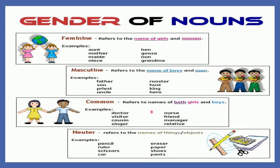Now next is common gender. The common gender refers to the name of both girls and boys. For example: doctor, visitor, cousin, singer, nurse, friend, manager, relative. The common gender belongs to words where the person may be a girl or a boy — for example, a doctor may be a girl or a boy, a visitor may be a girl or a boy, a cousin may be a girl or a boy. So when both girls and boys fall into the same category, it is a common noun.